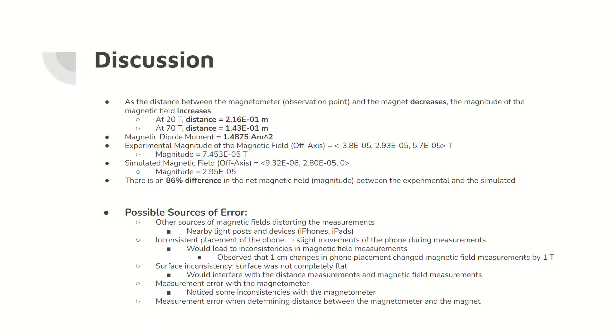These errors include other sources of magnetic fields such as nearby light poles, inconsistent placement of the phone magnetometer, surface inconsistency, measurement error from the magnetometer, and measurement errors from measuring the distances between the magnetometer and the magnet.